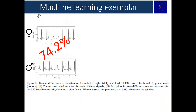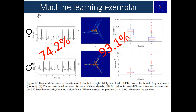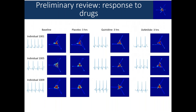What this tells us is that the morphology of the ECG wave is giving us a bit more information about the differences between men and women compared to just the interval measures alone. She's also been looking at the effect of drugs and individual variation — within individuals you can see that people have very unique attractor signatures for their ECG, which is well established. You can also see that as you go across the rows, the effect of drugs has an impact on the attractor and we can quantify that very readily.